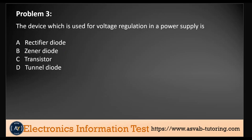Next question. We've got a device which is used for voltage regulation in a power supply, called one of these answers. The answer here is the Zener diode. In a power supply, one of the simplest ways of regulating the DC output voltage is by keeping the output voltage constant by using a Zener diode.